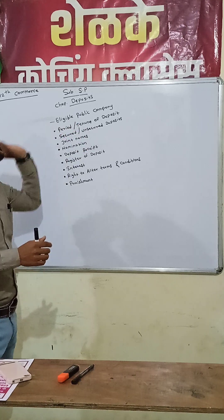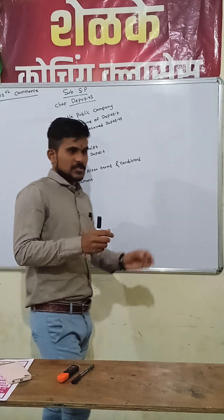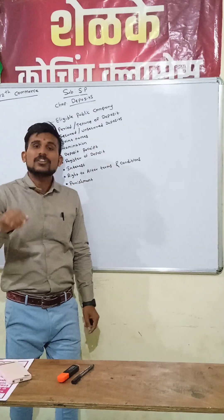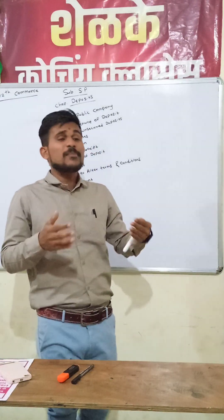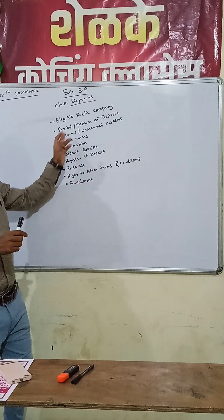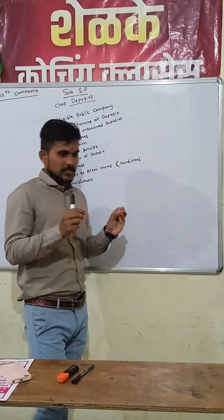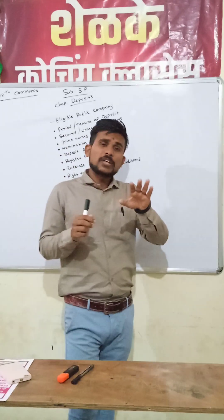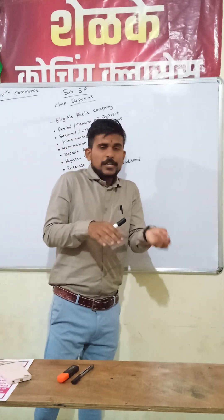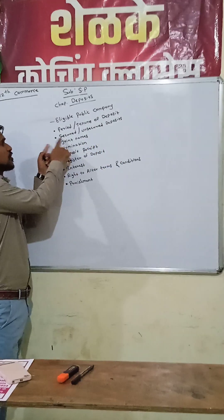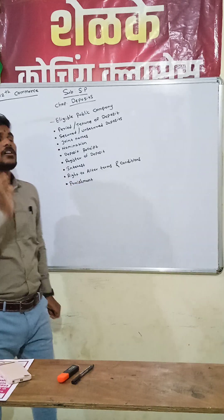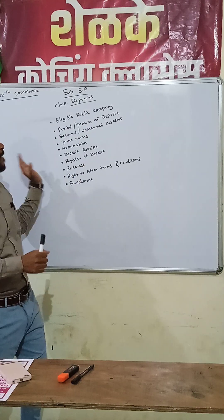Regarding the period of a deposit, the deposit is accepted by the company for a minimum of 6 months and a maximum of 36 months. Next, regarding secured or unsecured deposits — there are two types of deposits, secured and unsecured. If there is a secured deposit, the charge is applicable within 30 days from the acceptance of the deposit by the company.